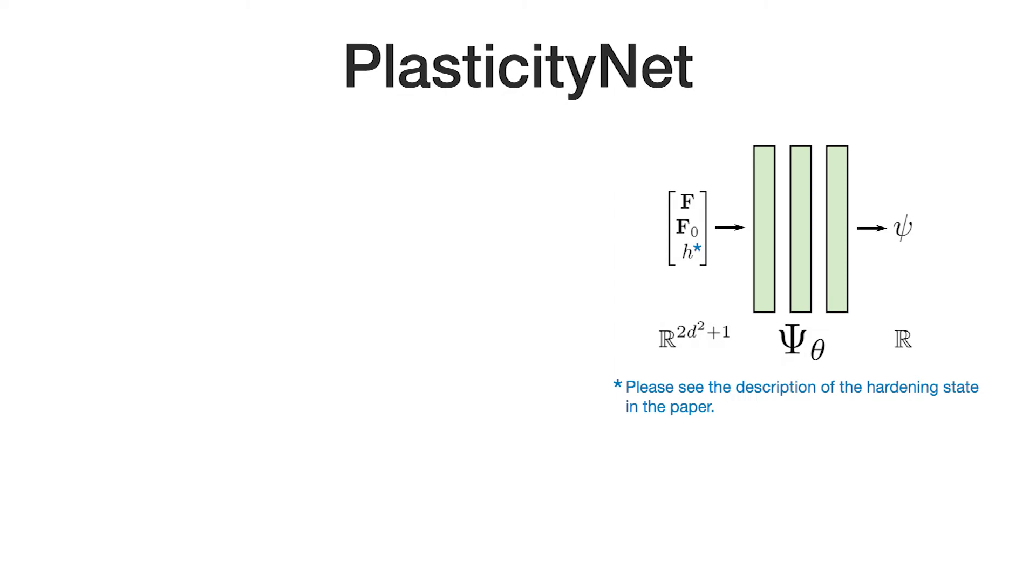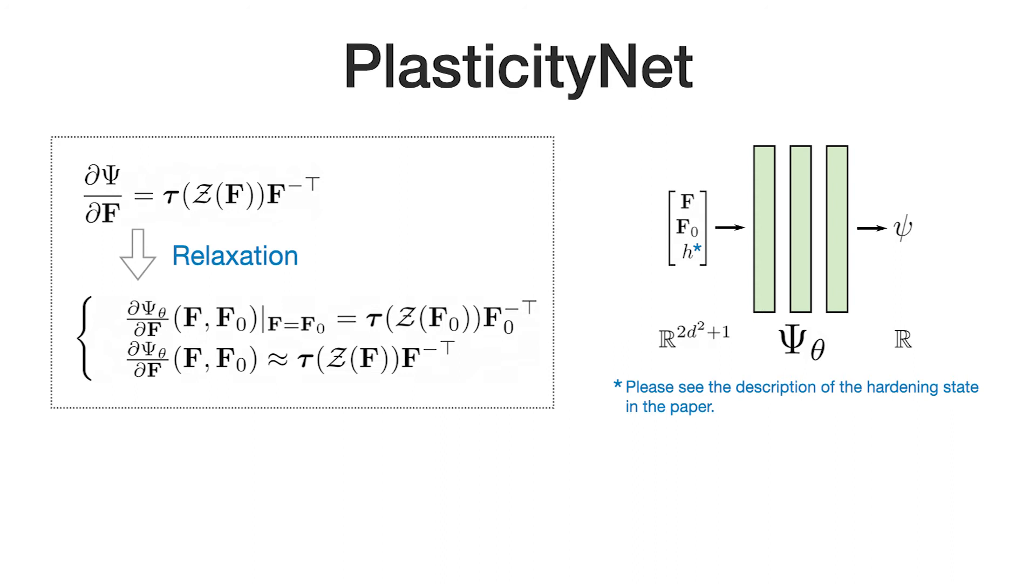We propose PlasticityNet, a neural network-based elastoplastic model that relaxes the integrability condition by finding a family of local potential energies. The integrability condition can be approximately fulfilled within small neighborhoods.